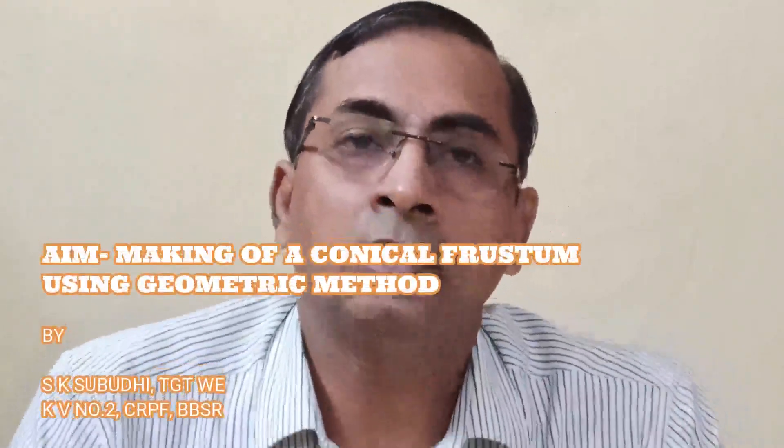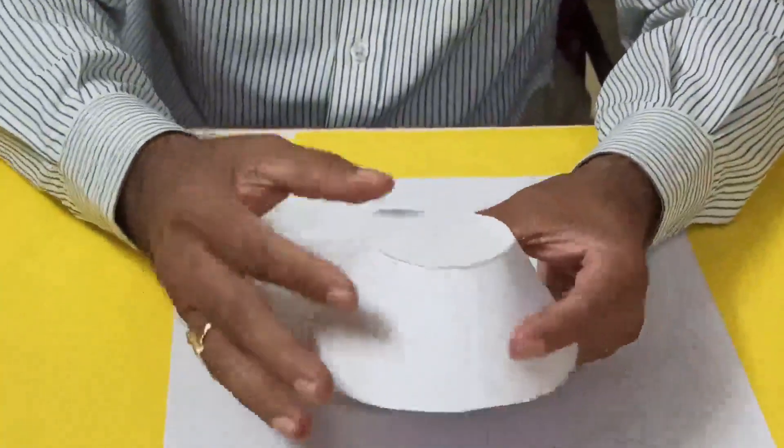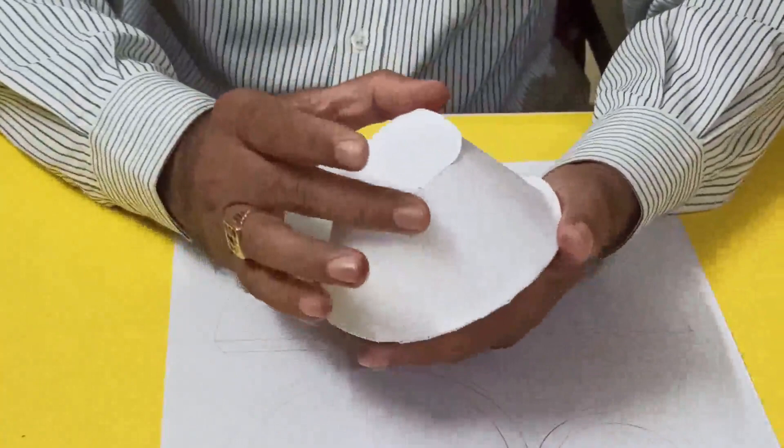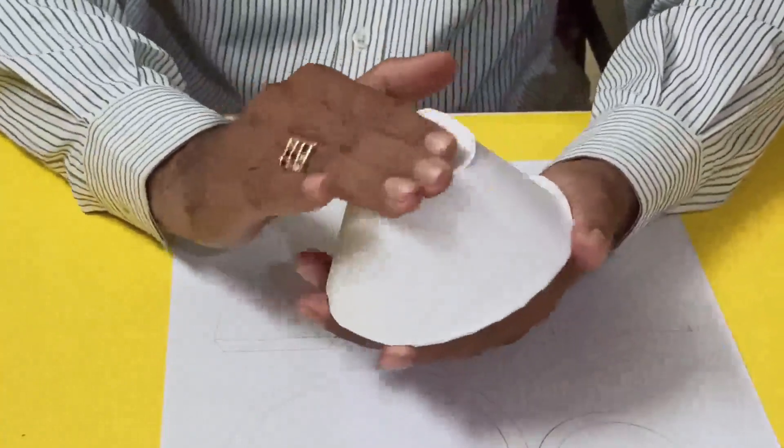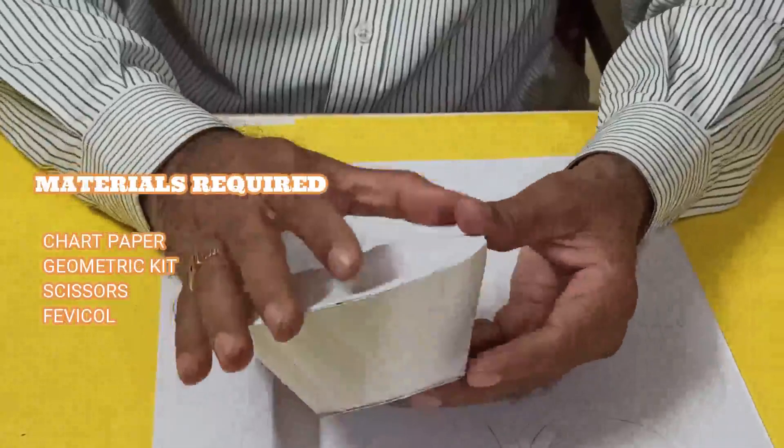Good morning students, let us discuss how to make a conical frustum. I made this one—the frustum has a three centimeter radius on the upper base or face, and the lower one has a six centimeter radius.